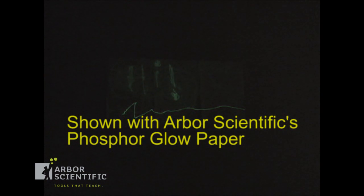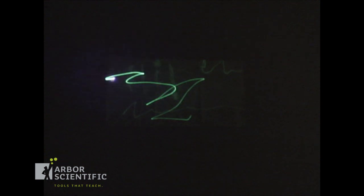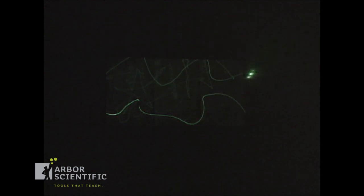Shine it on something with glow-in-the-dark properties, such as a sheet of Arbor Scientific's phosphor glow paper. We are seeing the same characteristics of excited electrons that we saw in fluorescence, only with phosphorescence, it takes longer for the material to transition back to its ground state, and therefore you see it longer with those types of materials. Try it with a green laser, and not much happens.